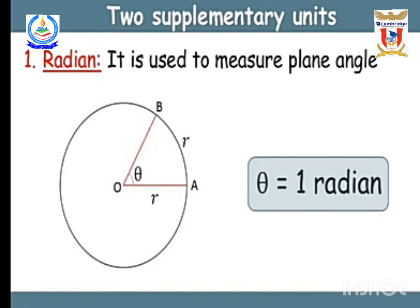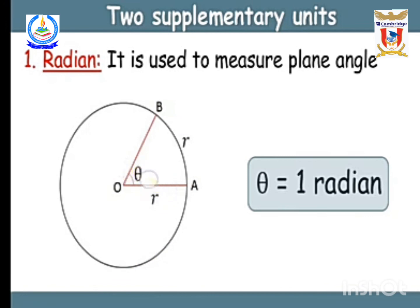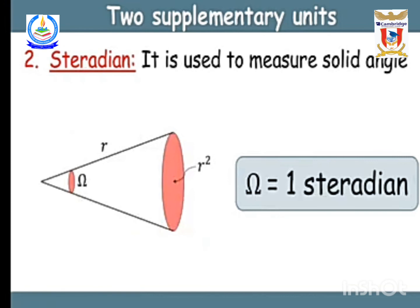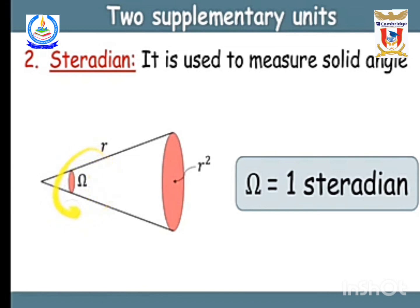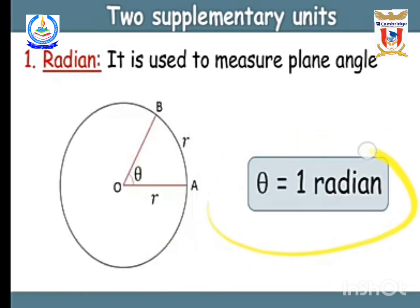There are also two supplementary units. The first is the radian, used to measure plane angle. In two-dimensional geometry, if we have a circle, the angle theta is known as a plane angle, and theta equals one radian. The second is the steradian, used to measure solid angle in three-dimensional geometry. If we have a cone, the angle Ω is a solid angle equal to one steradian. We will discuss the derivations of how theta equals one radian and Ω equals one steradian in our next video.